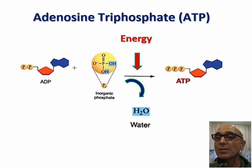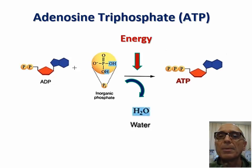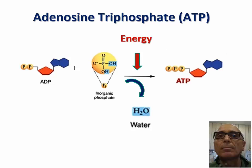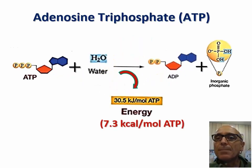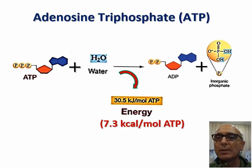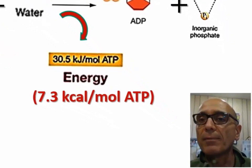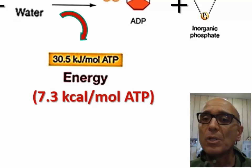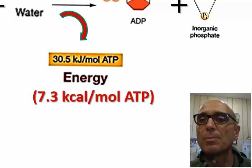This reaction is endergonic, meaning that the product ATP has a higher potential energy level than the reactants, ADP and inorganic phosphate. ATP breaks down to ADP and inorganic phosphate through the process of hydrolysis. This reaction is exergonic, thus releasing energy. Under standard conditions of temperature and pressure, the total amount of energy released is 30.5 kJ per mole of ATP, which is equivalent to 7.3 kcal per mole of ATP.